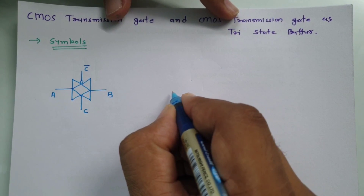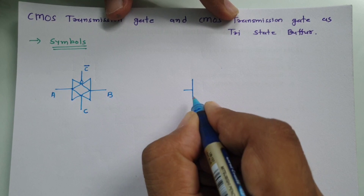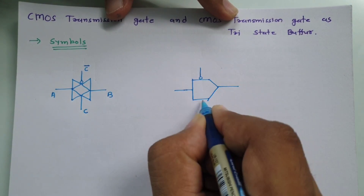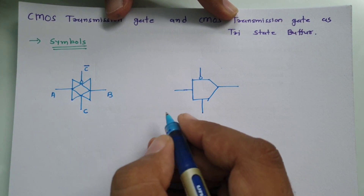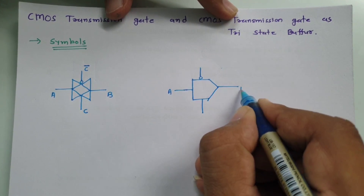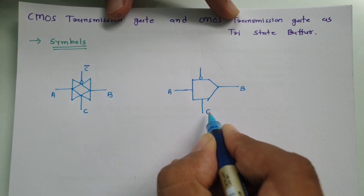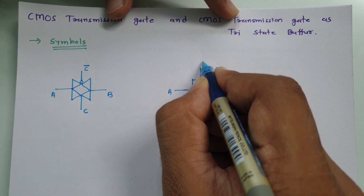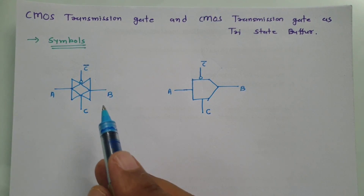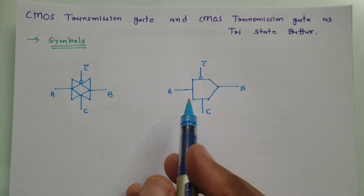There are a few more symbols. I'll draw the second CMOS transmission gate symbol here — we have input A, output B, and control signal C, and the complement of it that we need to give over here. So that is how CMOS transmission gate symbols are there.